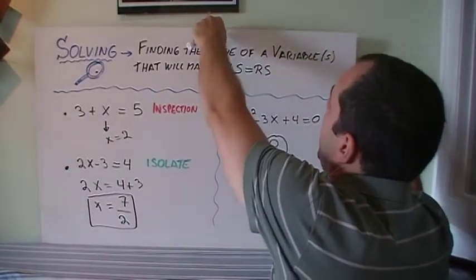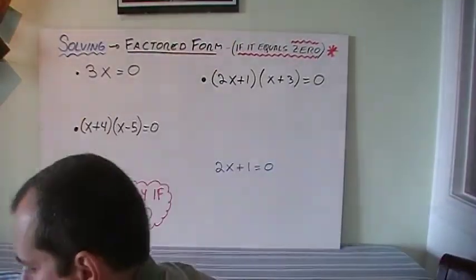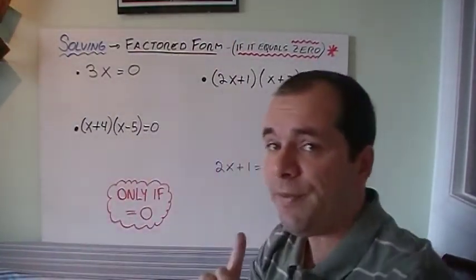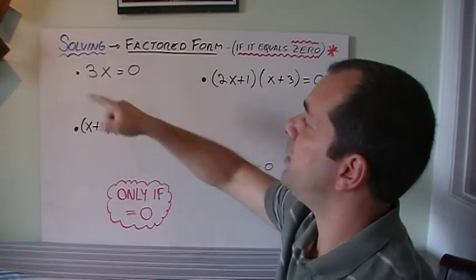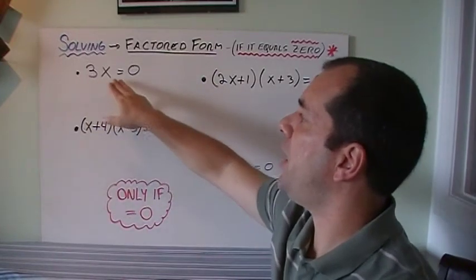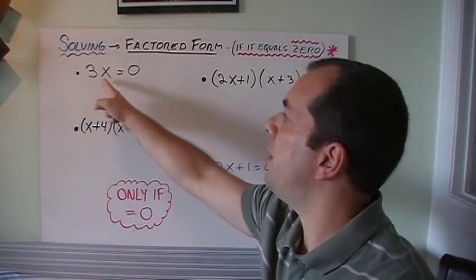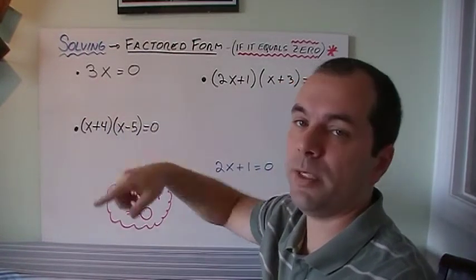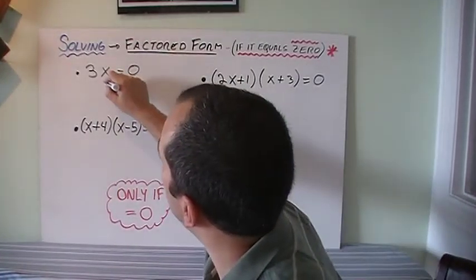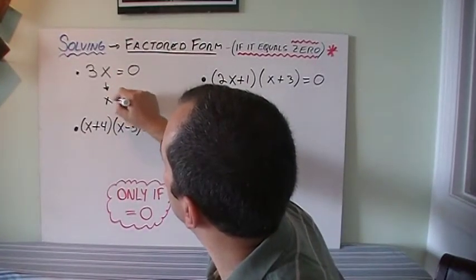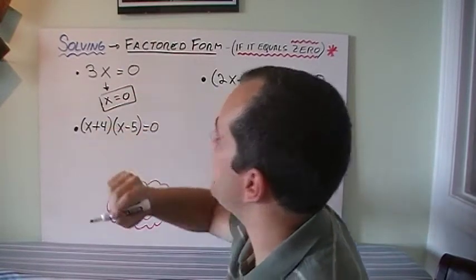Let's look at how do we solve equations if they equal 0, and only if they equal 0. If it's in factored form, if I've got 3 times x gives me 0, by inspection I know that the only number that I can multiply to make it go to 0 has to be 0. So I know that by inspection, x equals 0.